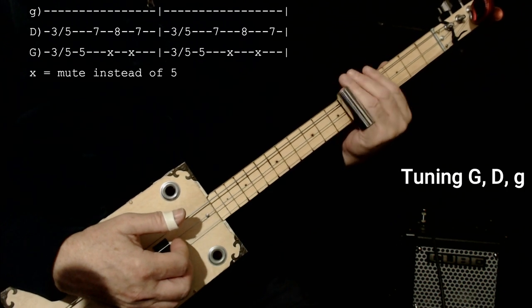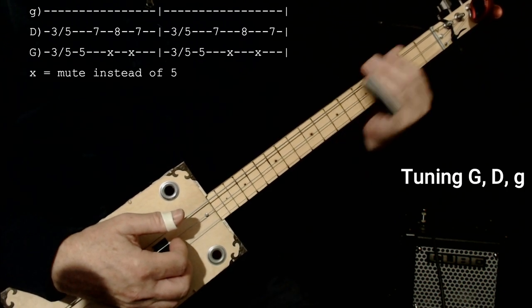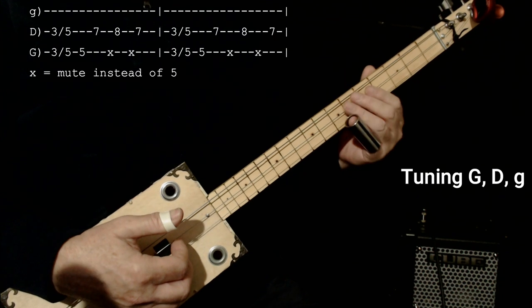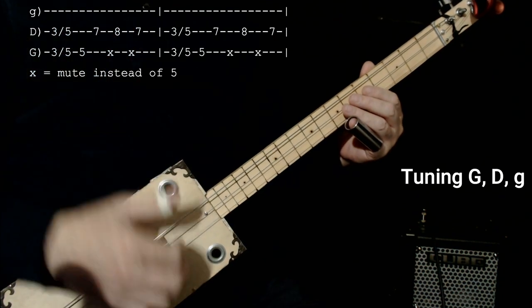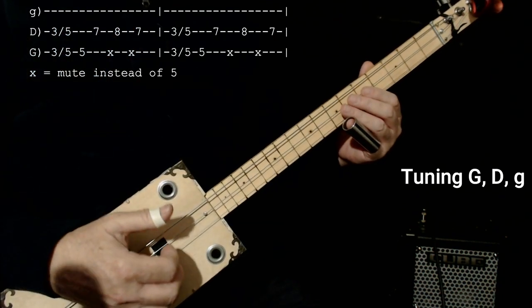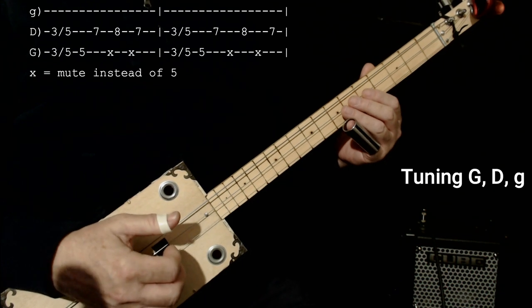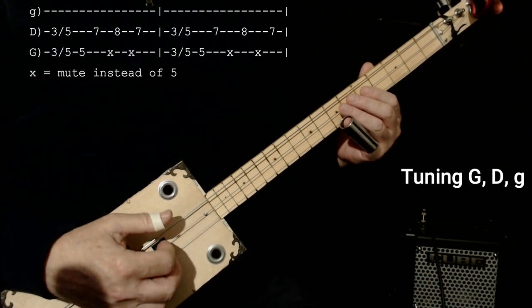So what you do is you don't worry about getting right to the five except for when you start the lick. And you let your palm mute the low string. And what happens is when you play it slow, probably sounds a little lame.